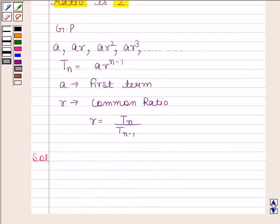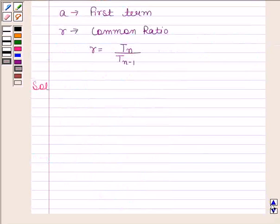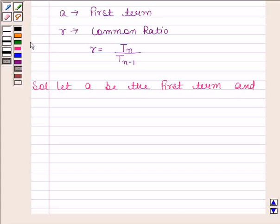Now in this question we have to find the 12th term of a GP whose 8th term and common ratio is given to us. Let a be the first term and r be the common ratio of a GP.